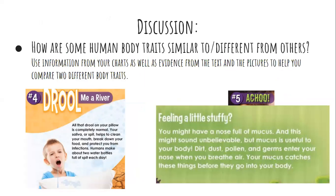Then I want you to have a discussion. Take a few minutes to write these questions in your notebook and discuss them with someone at your house — a sibling, parent, grandparent, or babysitter. How are some human body traits similar to or different from the others? You may need to go back and look at your charts or the text. You can use evidence from the text or pictures to help you compare the body traits.